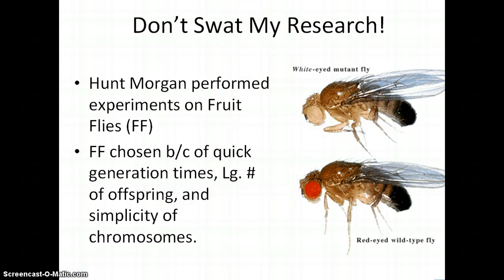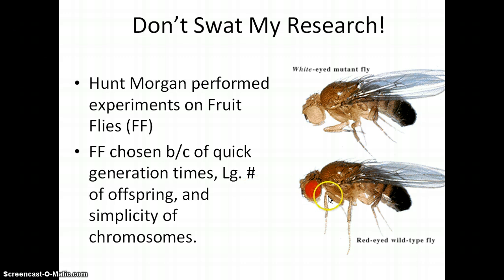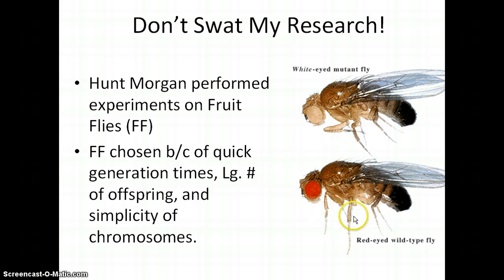Much of the early work on chromosome behavior was done in the lab of Thomas Hunt Morgan, and he did his work using fruit flies as a model. Fruit flies were chosen because of their quick generation time — they can have a new generation created within about two weeks, they produce a prodigious number of offspring, and they only have four chromosomes to track rather than the 46 that we see in humans.